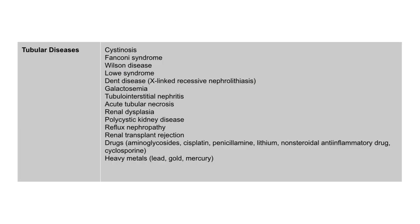Tubular diseases associated with fixed proteinuria include cystinosis, Fanconi syndrome, Wilson disease, Lowe syndrome, Dent disease, galactosemia, tubular interstitial nephritis, acute tubular necrosis, renal dysplasia, polycystic kidney disease, reflux nephropathy, renal transplant rejection, drugs, and heavy metals.